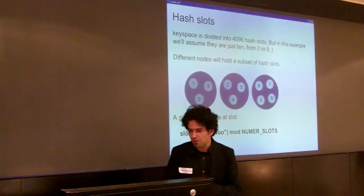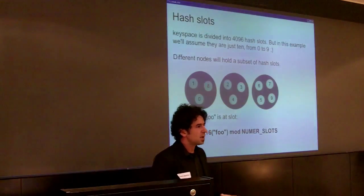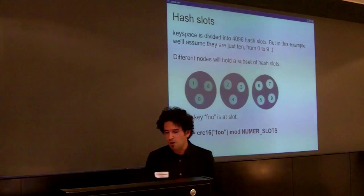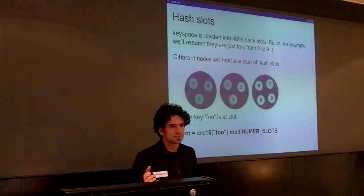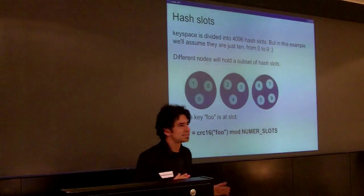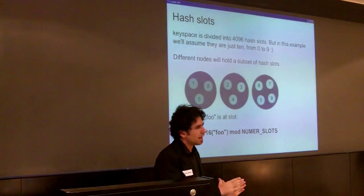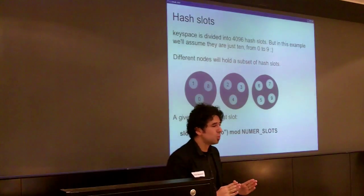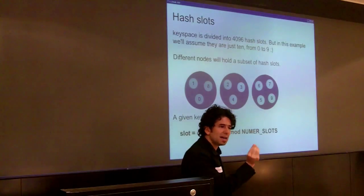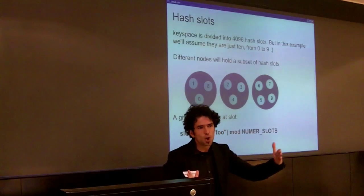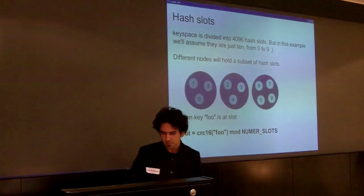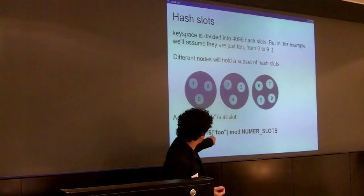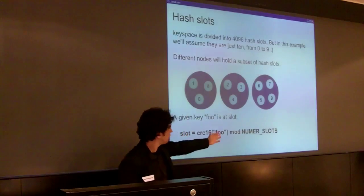Another fundamental idea of Redis cluster is that the key space is split into many different parts. These parts are a fixed number of 4096 hash slots. Every single node will hold a subset of these hash slots. When you do resharding, you need to move at least one hash slot — you can't move half a hash slot, it's our atomic unit in the cluster. It's trivial to compute what hash slot a key belongs to: it's just CRC16 of the key modulo 4096.